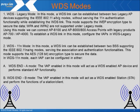The first mode we will cover is legacy mode. In this mode, a WDDS link can be established between two legacy access point devices supporting the IEEE 802.11 ABG modes, without serving the 802.11N authentication functionality while establishing the WDDS link. This mode supports WEP encryption to secure the data. WPA and WPA2 are not supported under legacy mode. Using this mode, you can connect the AP8100 and the AP8000-800 access points with legacy products such as the AP700 and AP4000.